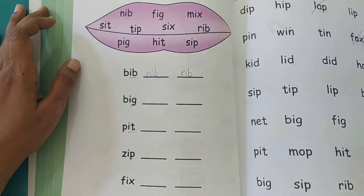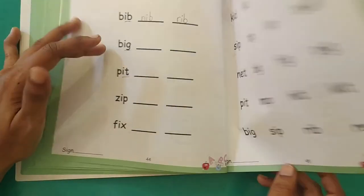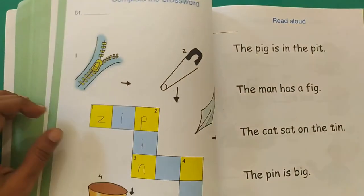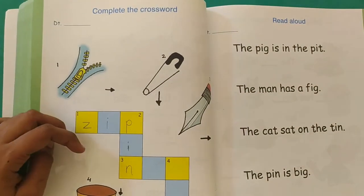This is your activity for today. Page number 44, 45, and 46 of your English book. That's all for today. Thank you.